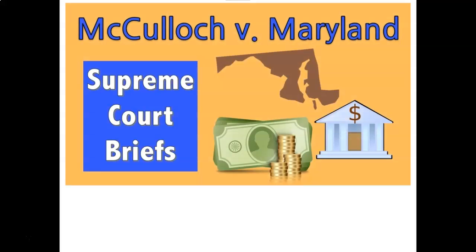The first one we're going to take a look at is McCulloch v. Maryland. We've already done this one, so it should be pretty much a review. Remember, there were two issues in this case. The first one dealt with whether or not the federal government had the right to make banks, and that's why the bank logo is right there.